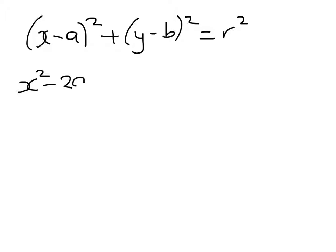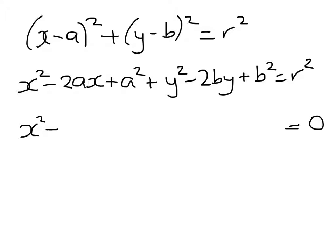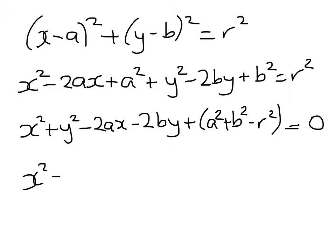we can expand the left-hand side and get x squared minus 2ax plus a squared plus y squared minus 2by plus b squared equals r squared. Now if I collect up terms so that we get something equaling zero, I'll get x squared plus y squared minus 2ax minus 2by plus a squared plus b squared minus r squared. In other words,